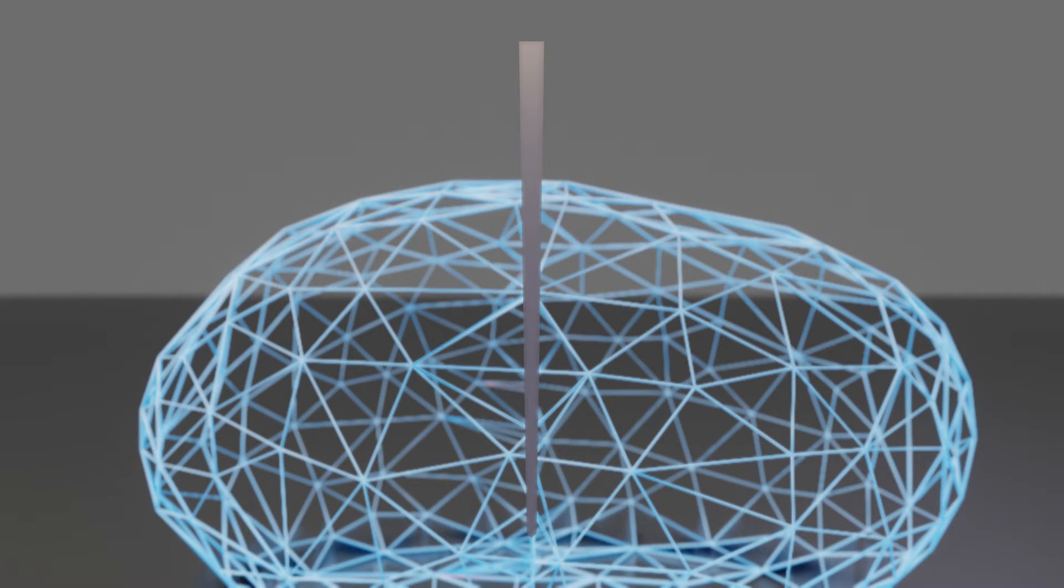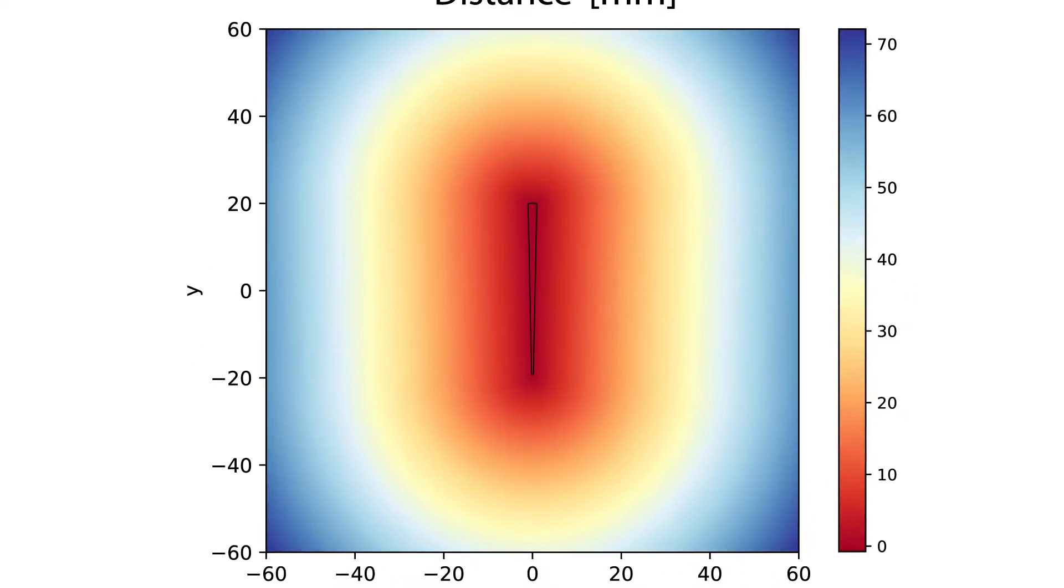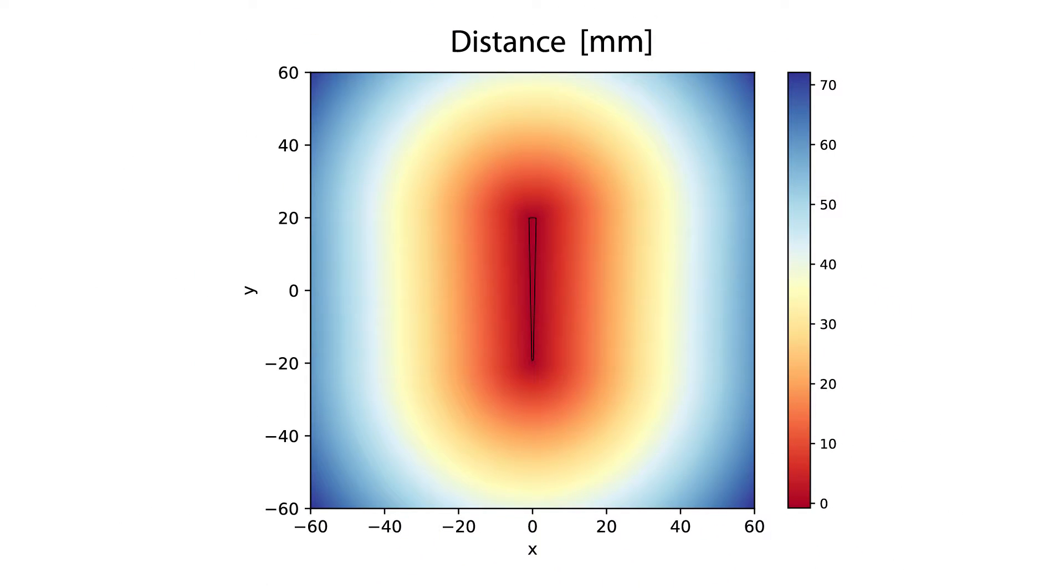We represent the geometry of the knife implicitly by a signed distance field. This representation is used to compute the penetration depth and surface normal at the places where the knife makes contact with the object.